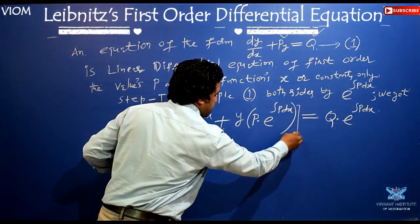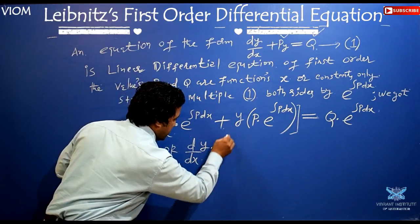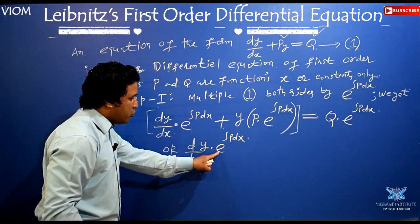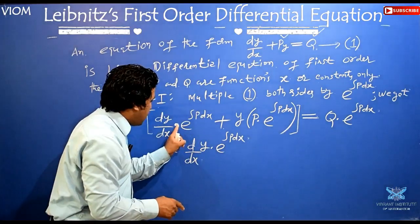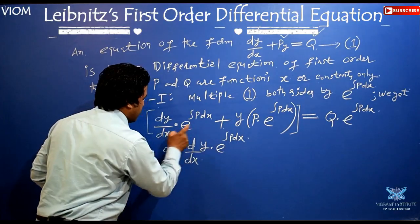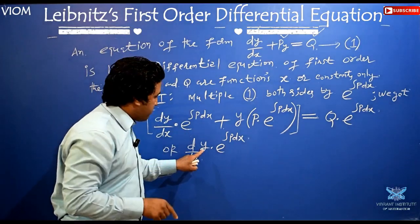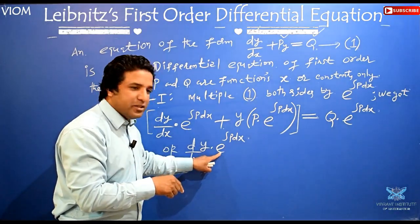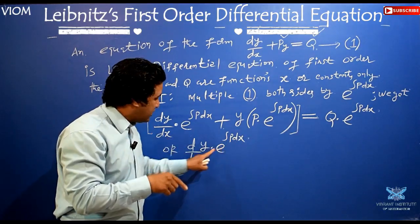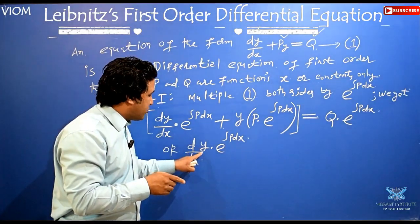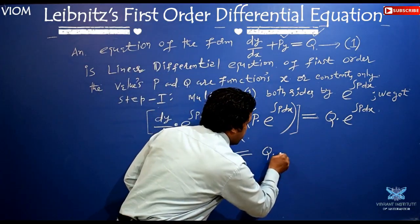The left-hand side can be written as d/dx of [y · e^∫Pdx]. This follows from the product rule — the uv method. Taking u as y and v as e^∫Pdx, and applying the product rule: you take y as constant and differentiate e^∫Pdx, plus take e^∫Pdx as constant and differentiate y with respect to x. This gives back the previous expression, so the left-hand side is d/dx of [y · e^∫Pdx].